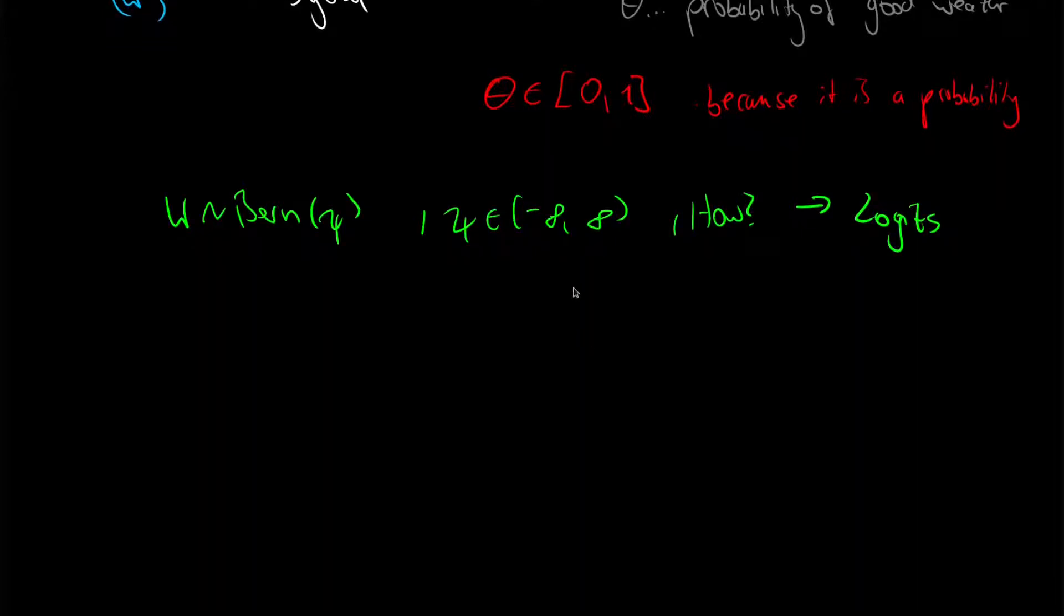This is really handy if you, for example, have some prior steps in computing this value, and those are not limited to just this range but can output any value. We use the following mapping: we define psi as the logarithm of theta over 1 minus theta.